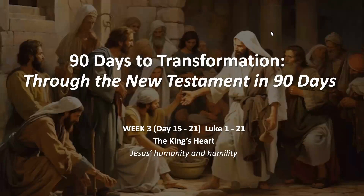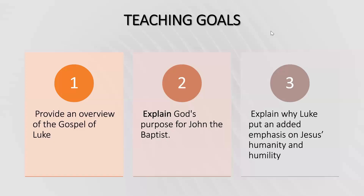This is 90 Days to Transformation through the New Testament in 90 Days, Week 3. This week we'll be reading Luke 1 through 21, and the title of this week's lesson is The King's Heart: Jesus' Humanity and Humility. The teaching goals for this week are: number one, to provide an overview of the Gospel of Luke; two, to explain God's purpose for John the Baptist; and three, to explain why Luke put an added emphasis on Jesus' humanity and humility in his Gospel.